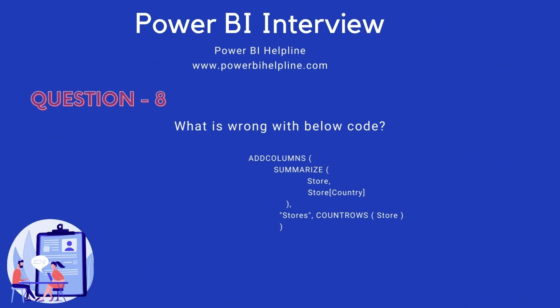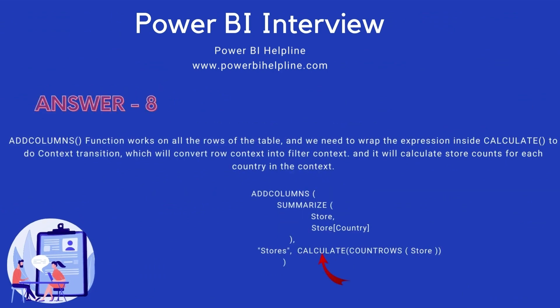Let's discuss a wrong DAX measure. Can you tell what is wrong in this expression? The ADDCOLUMNS function works on all the rows of the table, and we need to wrap the expression inside CALCULATE to do Context Transition, which will convert Row Context into Filter Context. It will then calculate store counts for each country in context. These questions may not be directly asked, but if you have that level of understanding, you will definitely impress the interviewer.